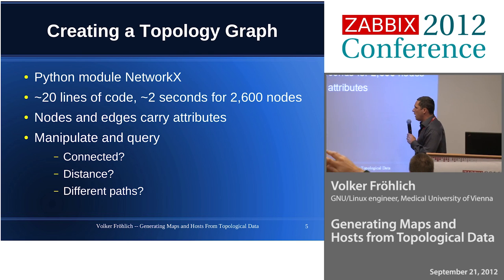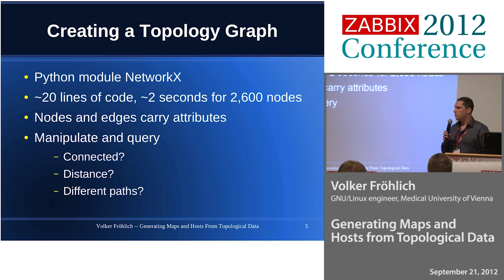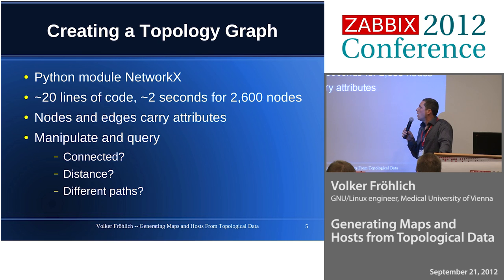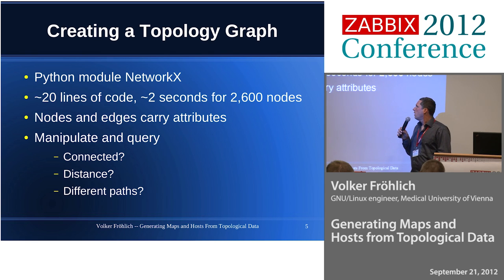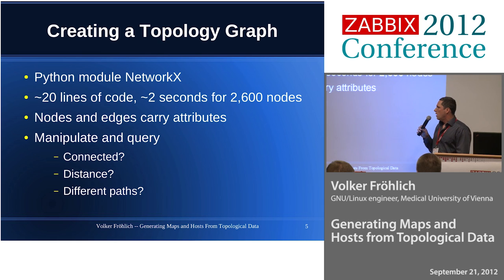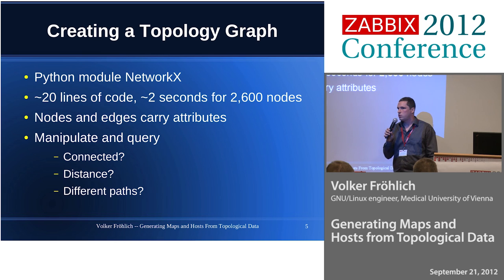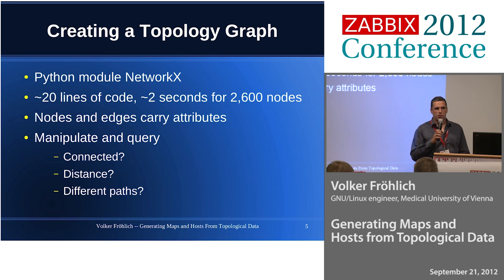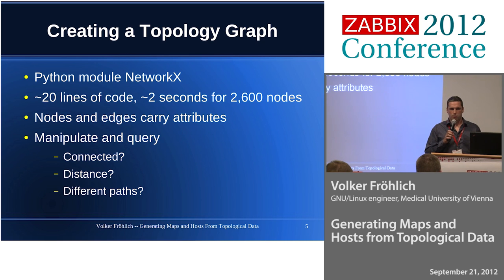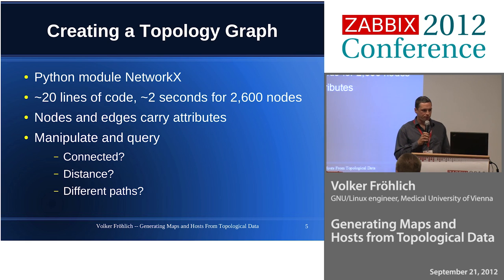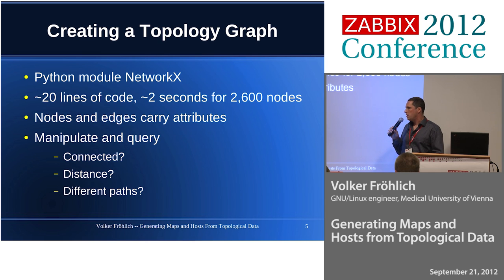What I'm using is Python and the module called NetworkX. It's a pretty good suite for analyzing and working with graphs. Within about 20 lines of code, you can import the data from the CSV file into a graph, and it takes roughly 2 seconds for 2,600 hosts, so it's pretty quick. It's organized as a Python dictionary, so you can add additional information for every node and every edge — information we're going to use when we create host groups, triggers, and so on. We can also do graph analysis: which hosts are connected directly, which have some kind of path between each other, and whether there are multiple paths.